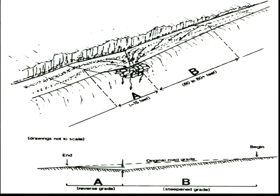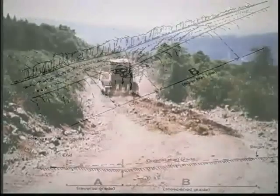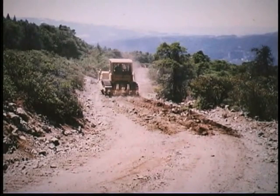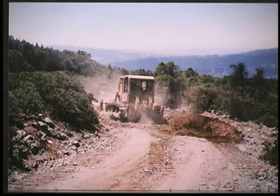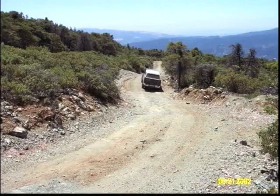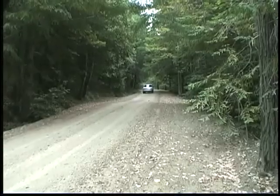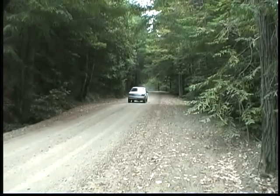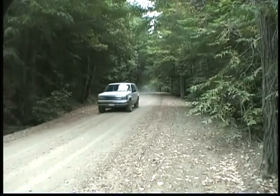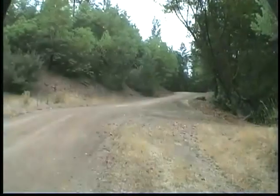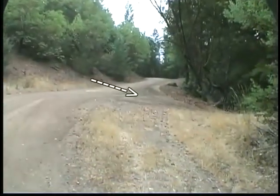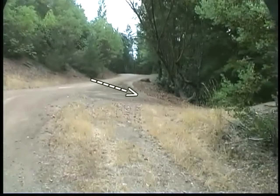The diagram shows the components of a well-constructed rolling dip. Depending on the steepness of the road, rolling dips should have a 30 to 80-foot long approach where we are slightly steepening the road grade. A broad U-shaped axis or low point in the road, and a 15 to 35-foot section of road which rises with a distinct positive or reverse grade to ensure all road runoff and sediment leaves the road through the axis of the dip. The road approach and dip axis should have a mild 2 to 4 percent outslope all the way to the outside edge of the road.